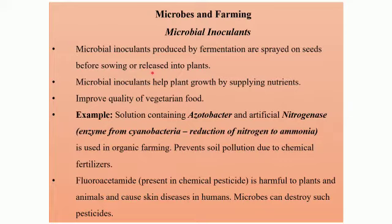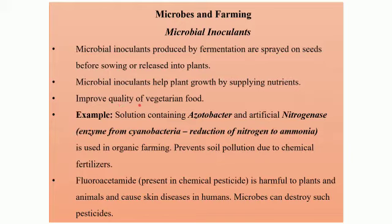These microbial inoculants can even be sprayed after the saplings of the plants are formed. So onto the saplings we can spray these microbial inoculants, or directly on the seeds before sowing. This helps the plants to grow well, and these microbes provide them with essential nutrients. It has even improved the quality of vegetarian food. Let us try to understand this with an example.